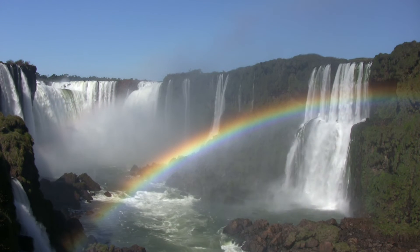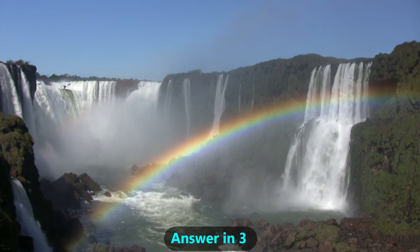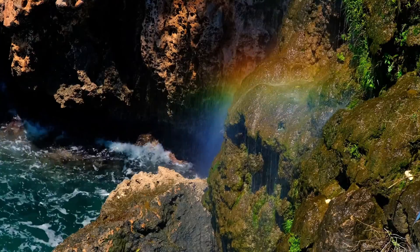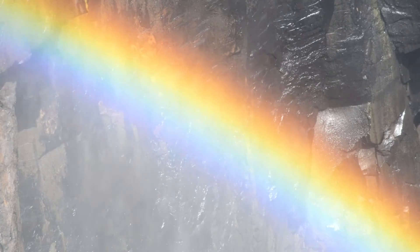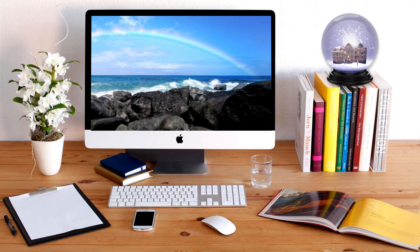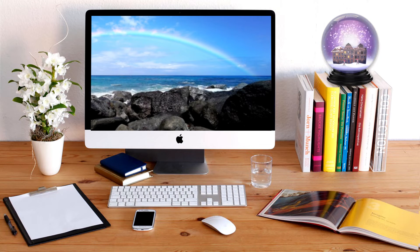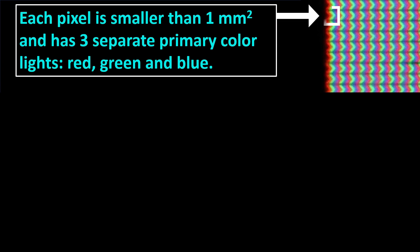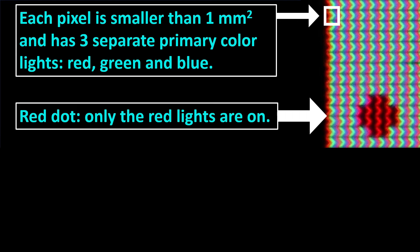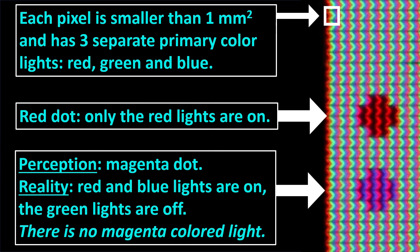Next, let's look at color illusions. Would you say there are more than three colors in this image? When we see a rainbow on a computer screen, we are seeing color illusions. In reality, our screens have only three different LCD color types — red, green, and blue — called the primary light colors. Our screens are made of thousands of pixels, each smaller than a square millimeter, with three separate primary color lights. We see a red dot when the red light is on while green and blue are off. We perceive a dot as magenta, but that's an illusion — in reality the red and blue lights are on while green is off.